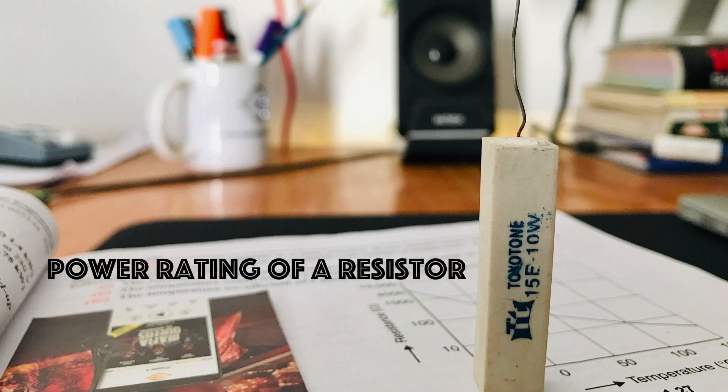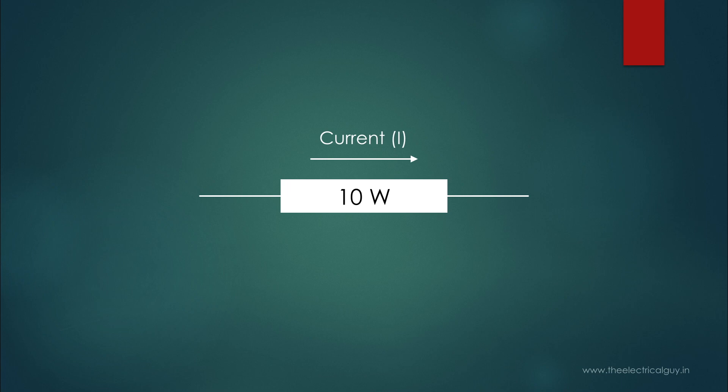Now anything that carries the current will generate heat. It may be a conductor or a resistor. The heat will be produced if current is passing through them.